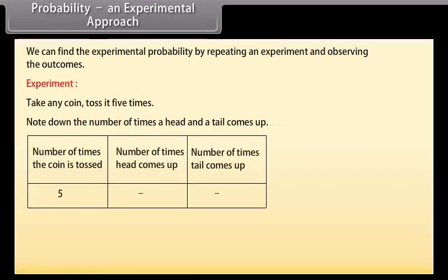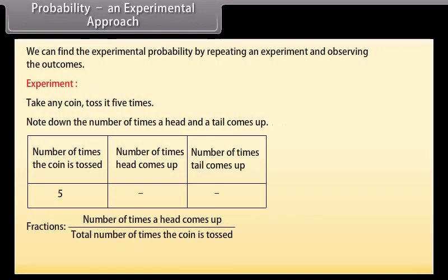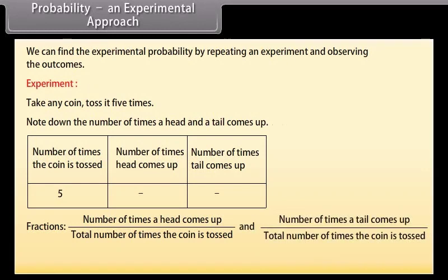Fill the given table, then write the fractions. First one is number of times a head comes up upon total number of times the coin is tossed, and the second one is number of times a tail comes up upon total number of times the coin is tossed.